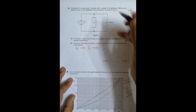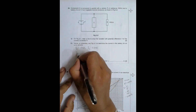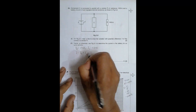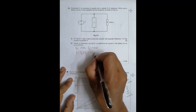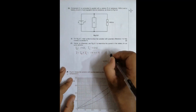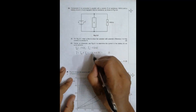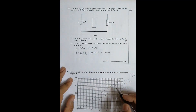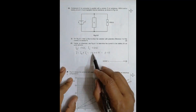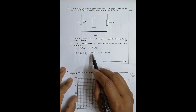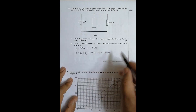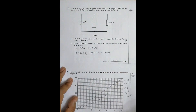The total current from the battery equals I_R plus I_C, which is 1.35 + 0.75 = 2.10 mA.